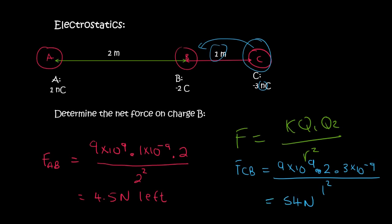And what will C do to B? So C is negative, and B is negative. So they're actually going to push each other away. So that's going to push B to the left, and B will push C to the right. But we don't care about C, because this whole question is on B.